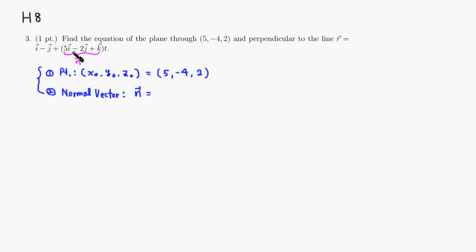It tells you the i component is 5, so it's going to be 5. The y component is negative 2, and the z component is 1. So that's the normal vector. The notation actually, I should have written this first: A comma B comma C.